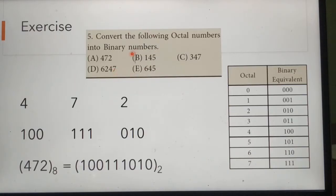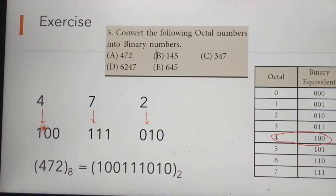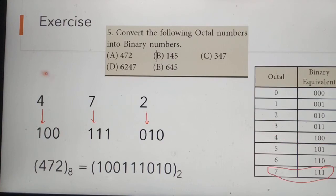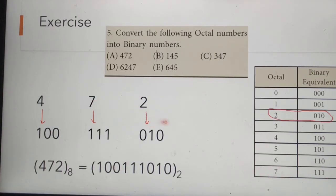Next we can see the book exercise. Here 5 octal numbers are given — convert the following octal numbers into binary numbers. Our first octal number is 472. The first octal digit is 4; its binary equivalent is 100, that is written here. Next octal digit is 7; its binary equivalent is 111, that is also written here.